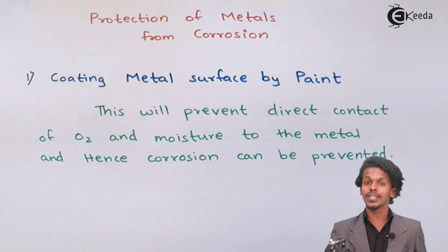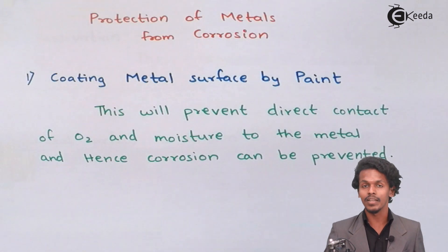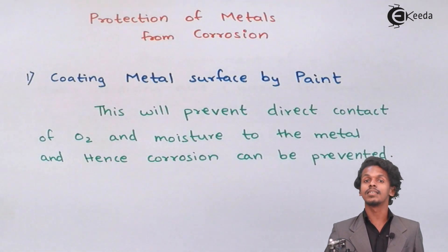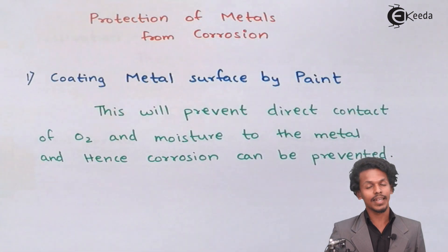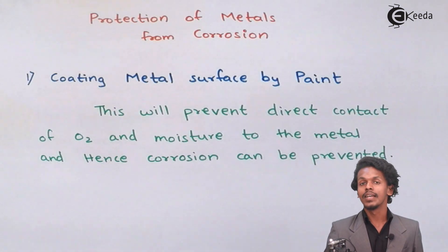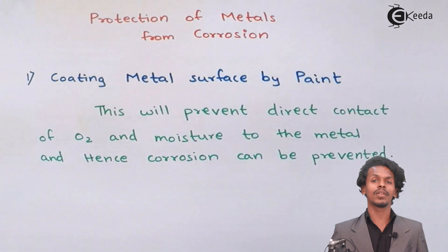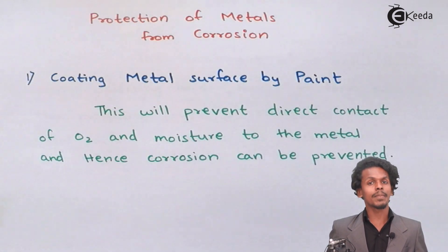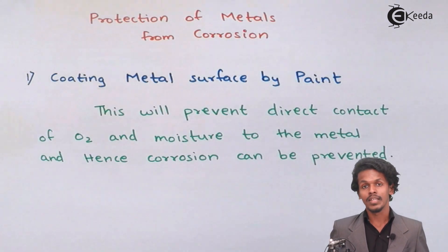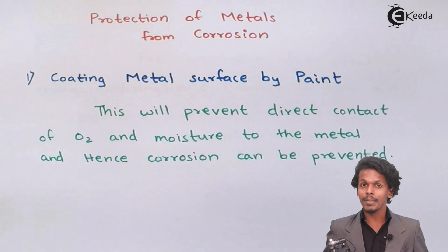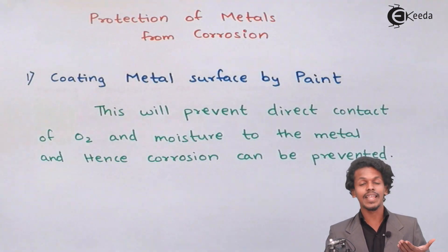As we discussed in the corrosion mechanism, oxygen and moisture play a very vital role in the destruction of a metal. So to avoid this, we paint a particular metal so there is no contact of oxygen and water with the metal. But sometimes, if we paint a car or a particular instrument and even a small scratch is produced, rusting will start from the inner layer itself. We could see a bump, an air gap, and bubble formation between the metal surface and the paint.